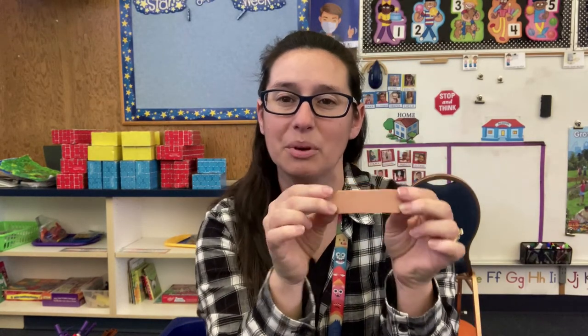Usually we use a band-aid when we get an owie or we get hurt and we need to cover it up and protect our owie from getting germs or dirt in it. So we use band-aids for our body, but today we're going to get a little bit creative and we're going to use our band-aids to make a picture on our paper.